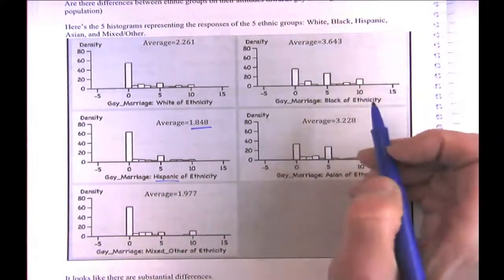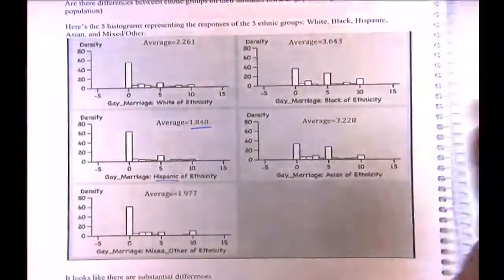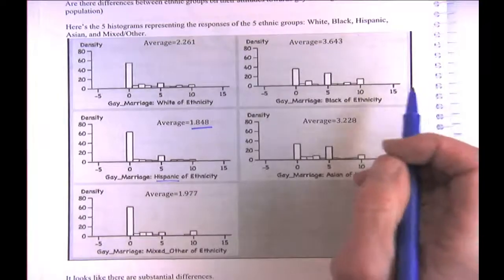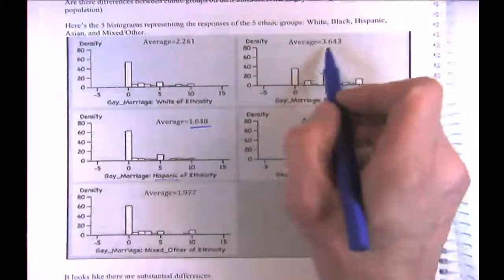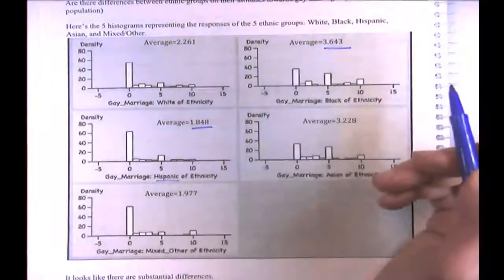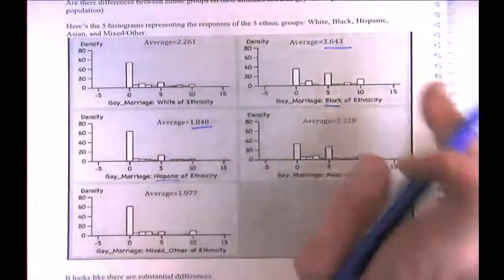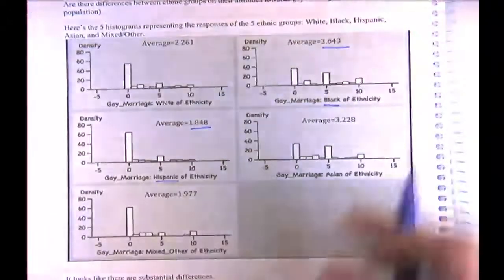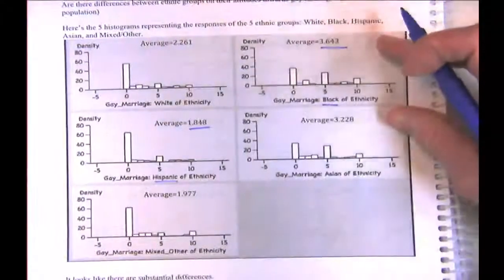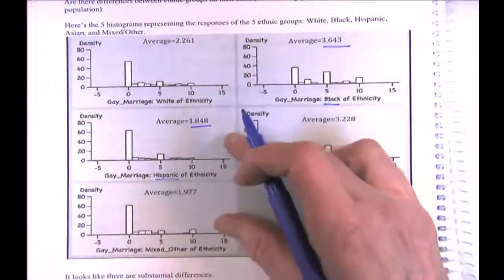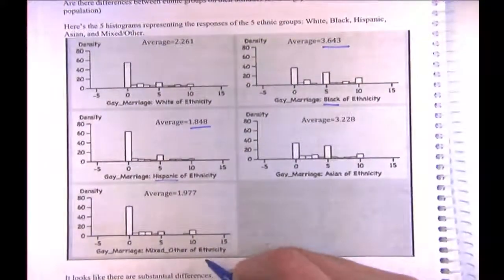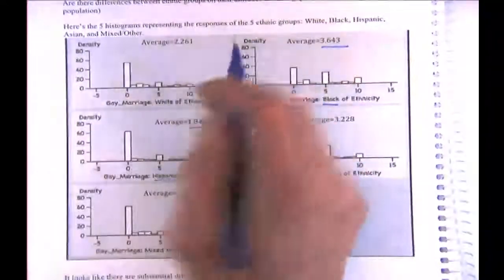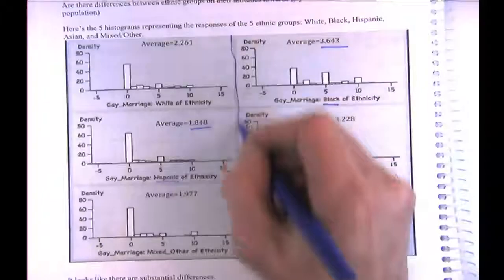The highest average is 3.643 for Blacks, meaning the most conservative on this scale. Blacks and Asians are pretty close — both pretty high. Whites and the 'other' group are also pretty similar and relatively low. So there's a split, more or less.